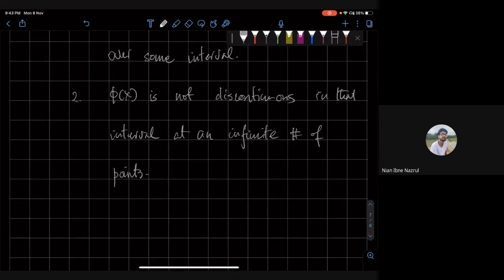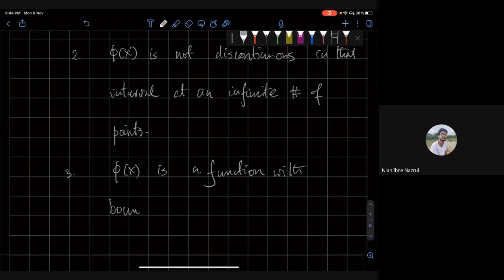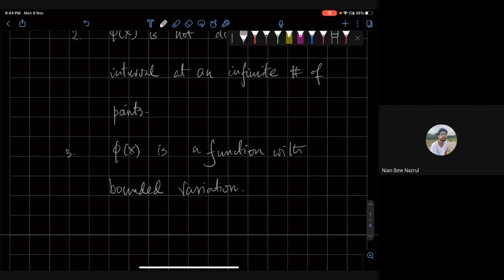Number three is that phi of x is a function with bounded variation. So what does bounded variation mean? This is of course not a mathematics class so I'll be very heuristic.